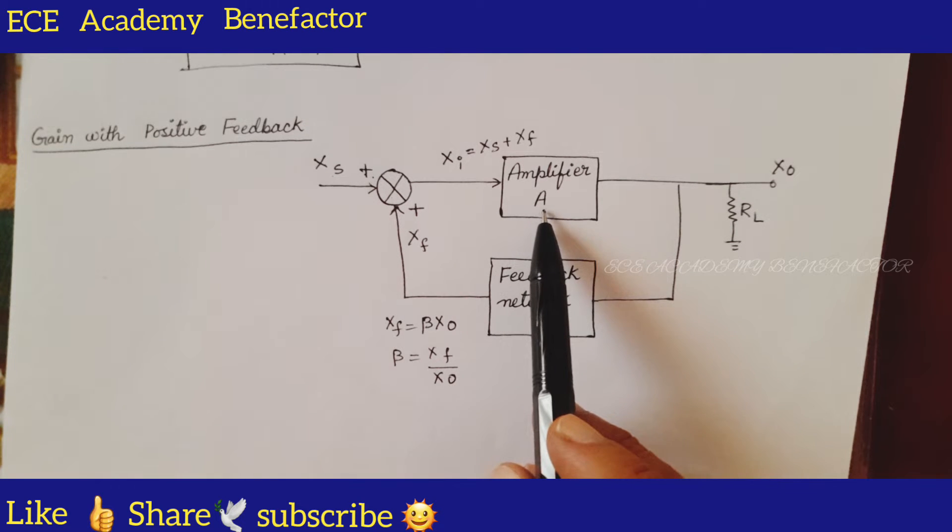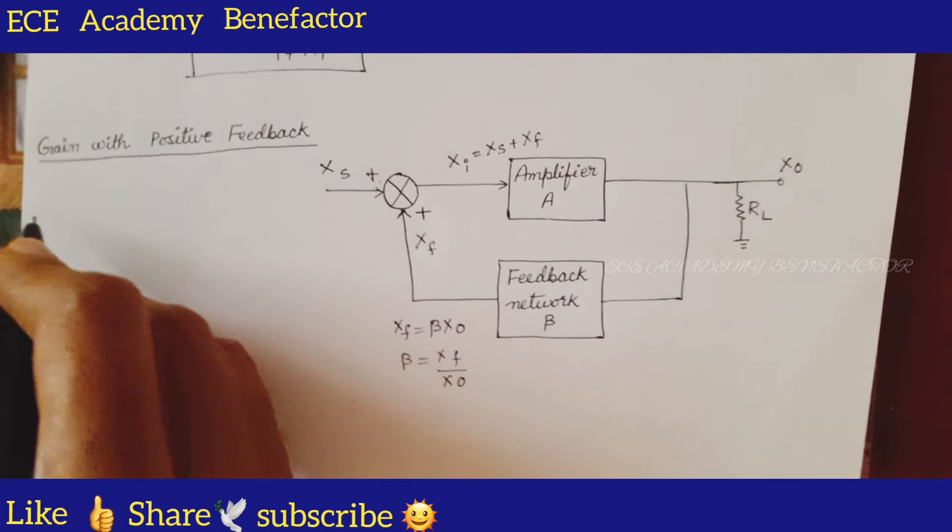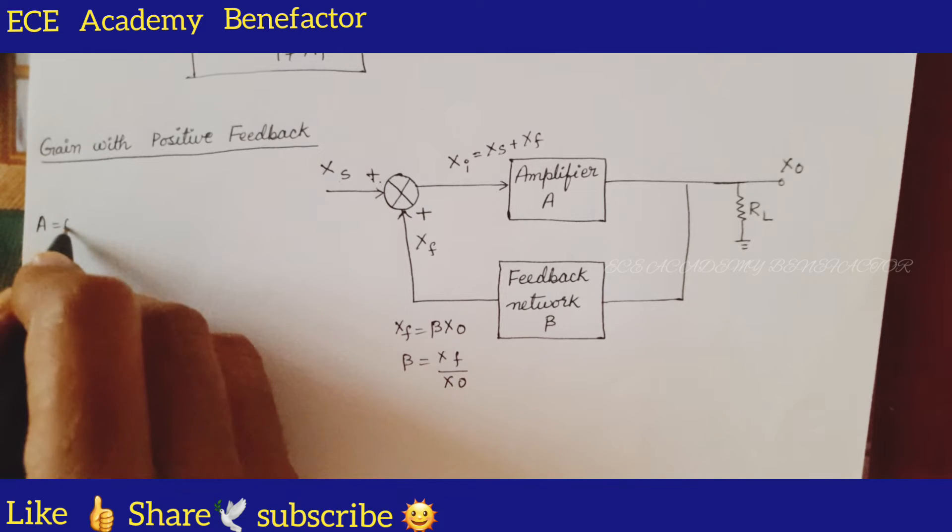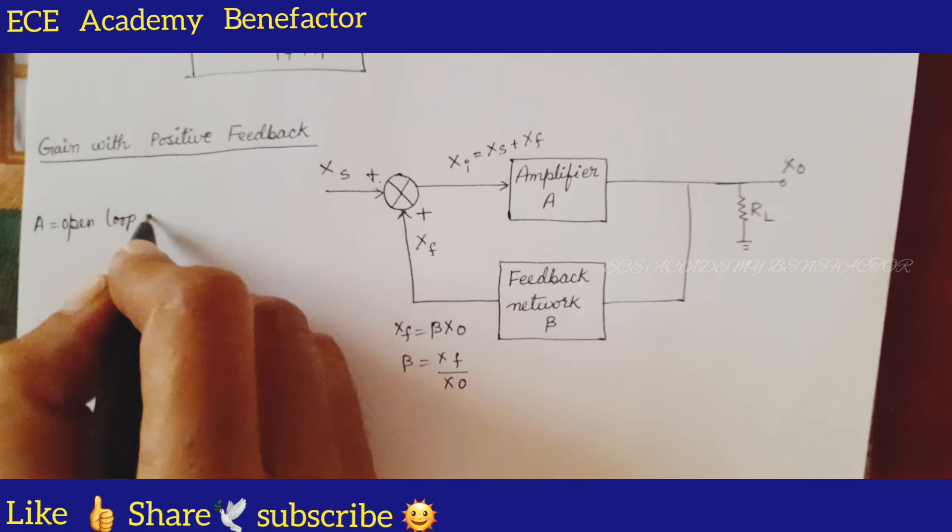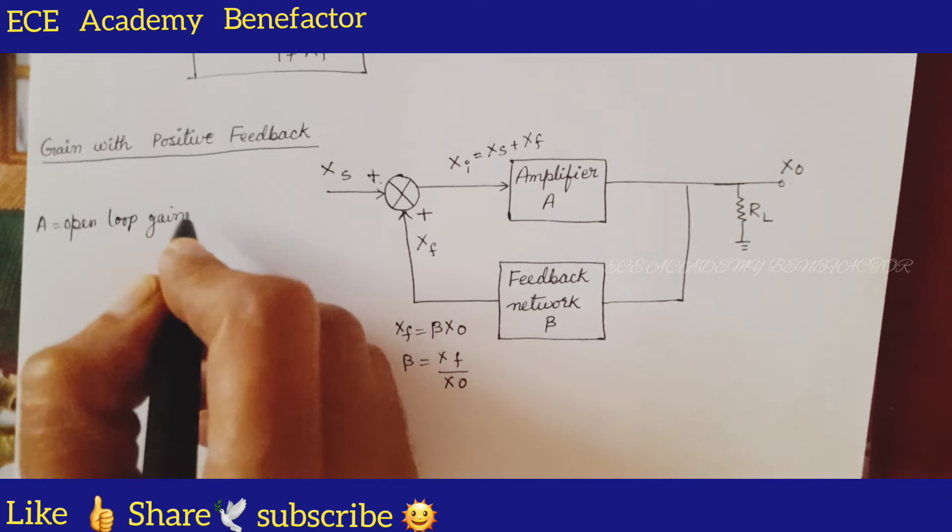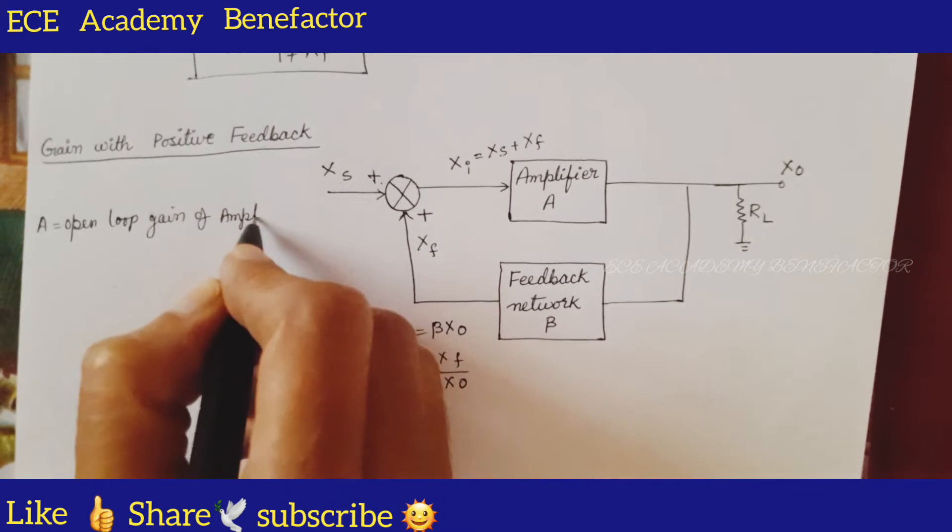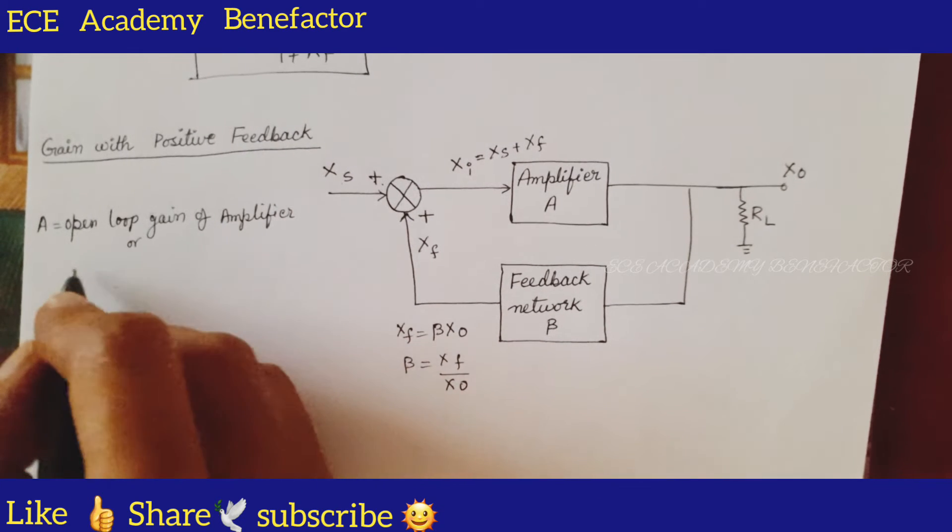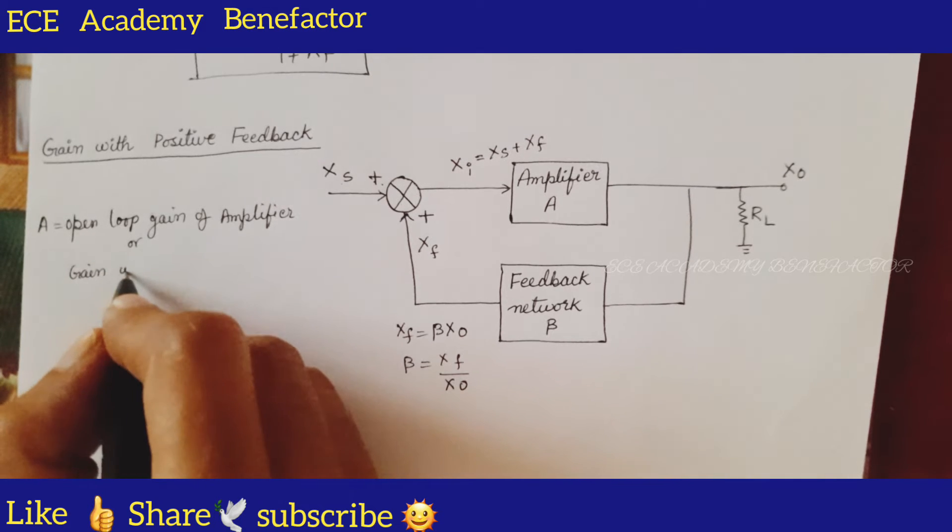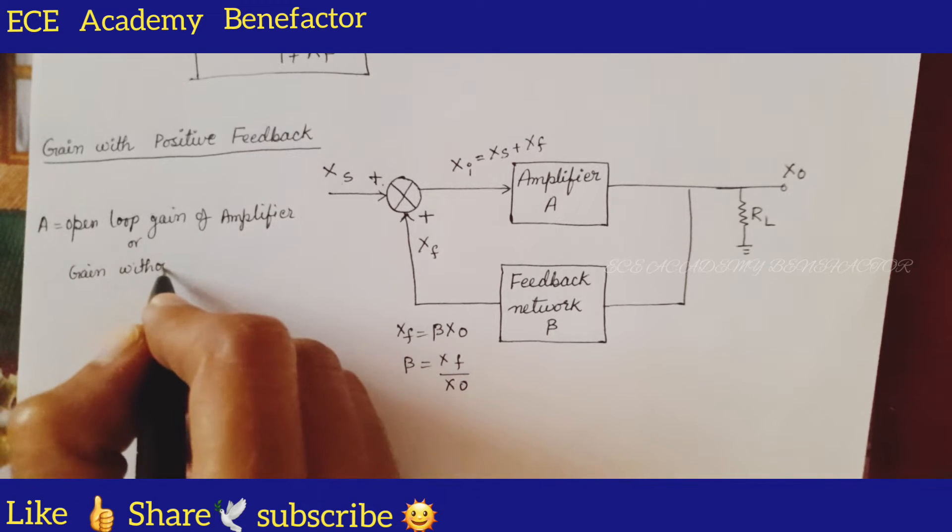If you see this gain equation A, what is A? Open loop gain. Another name for open loop gain is gain of the amplifier. What is the other name of open loop? Gain of the amplifier without feedback.